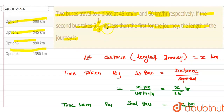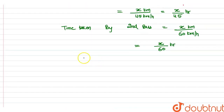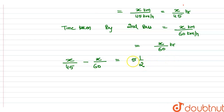Now we use the difference in times, which is 5 and a half hours. Since the second bus takes 5 and a half hours less than the first, we set up the relation: X/45 minus X/60 equals 5 and a half hours, which equals 11 divided by 2 hours.